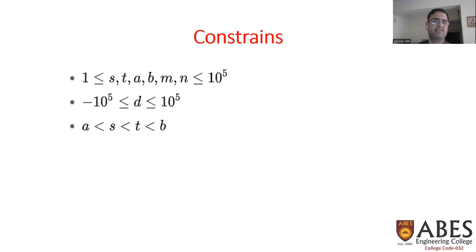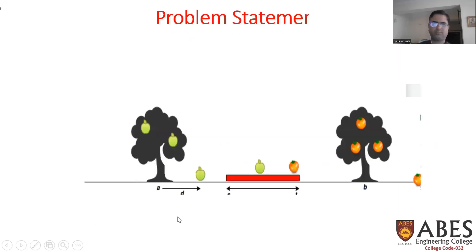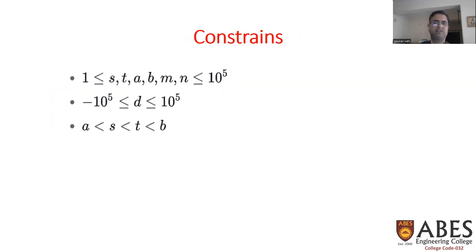The constraints state that the values of S, T, A, B, M, and N are in the range 1 to 10 to the power 5. The distances can range from minus 10 to the power 5 to plus 10 to the power 5, because the fruit can fall either to the left or right. Also, from the diagram, A is always less than S, and B is always greater than T.